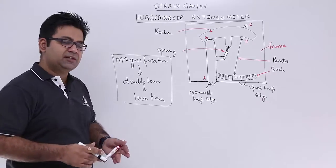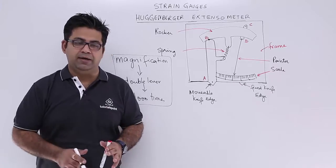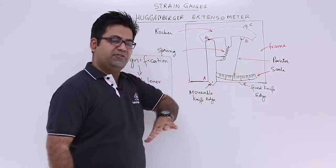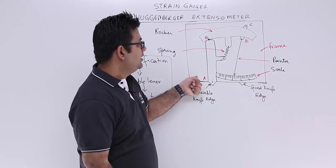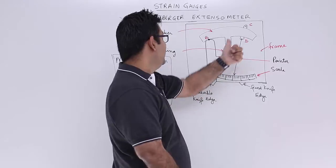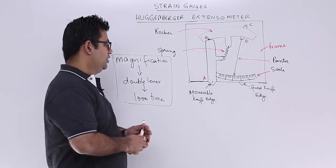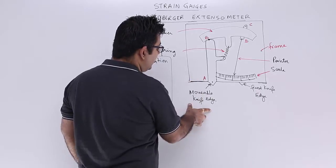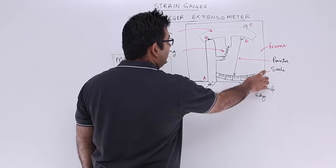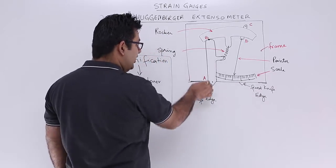Now the advantage is that there is no fixed gauge length which you require for its functioning. You have a frame. On this frame you have points A and point C. So these two points A and C they are fixed onto the frame. Now this point A is basically a movable knife edge and there is a fixed knife edge which is fixed to the frame. So this cannot move but this can move in a vertical direction.